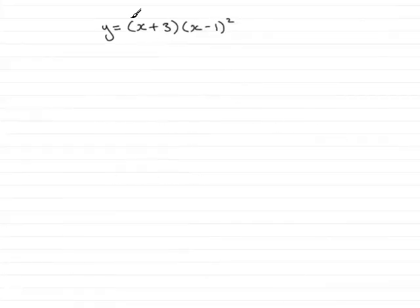Now, in this part of the question we're given the curve C, which is y equals x plus 3, all multiplied by x minus 1, all squared. We're asked to sketch the graph, showing clearly the coordinates of the points where the curve meets the coordinate axis.